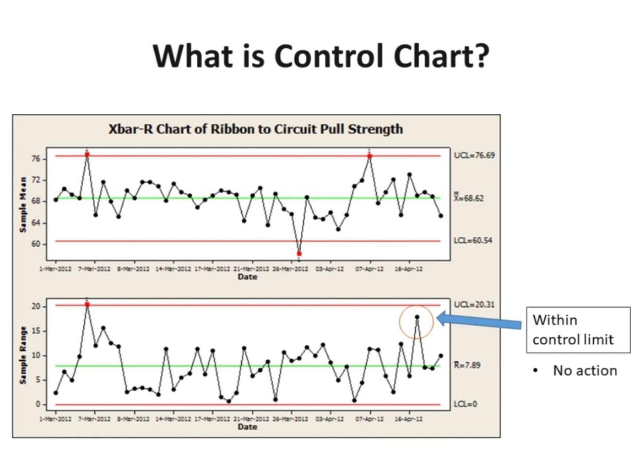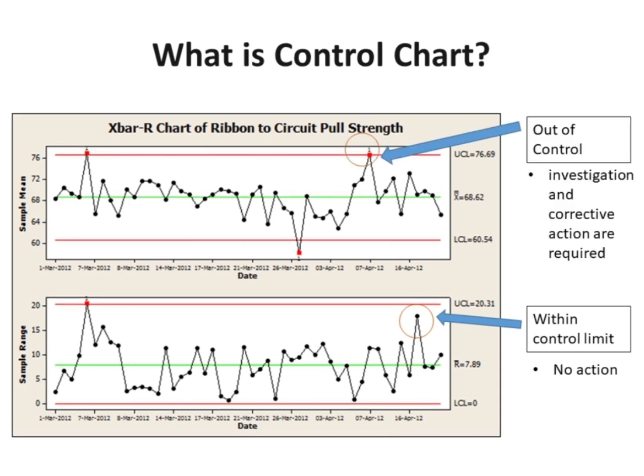As long as the points plot within the control limits, the process is assumed to be in control and no action is necessary. However, a point that plots outside of the control limits is interpreted as evidence that the process is out of control, and investigation and corrective action are required to find and eliminate the assignable cause or causes responsible for this behavior.